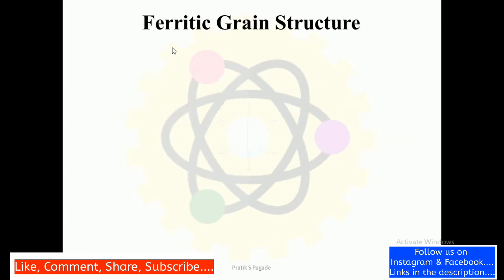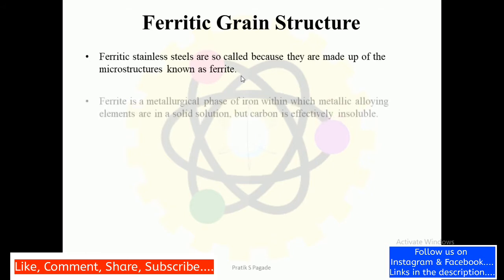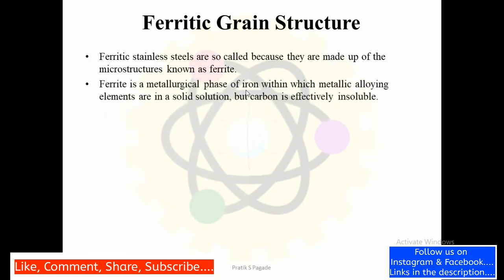Now we will understand ferritic grain structure. Ferritic stainless steels are so called because they are made up of the microstructure known as ferrite. Ferrite is a metallurgical phase of iron within which metallic alloying elements are in solid solution, but carbon is effectively insoluble.